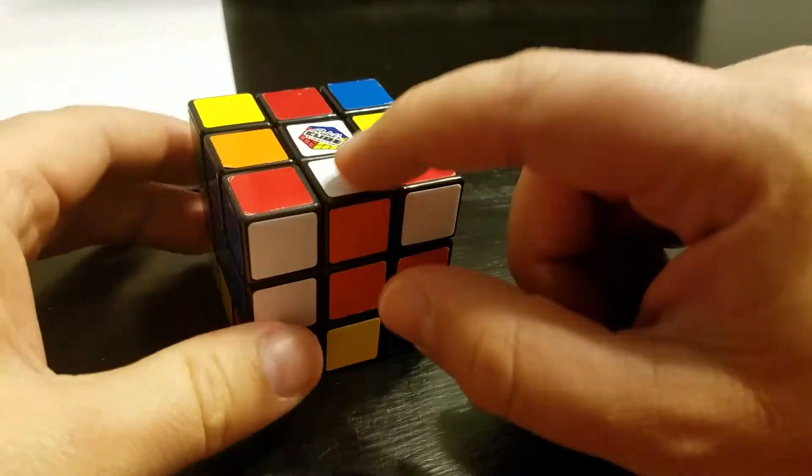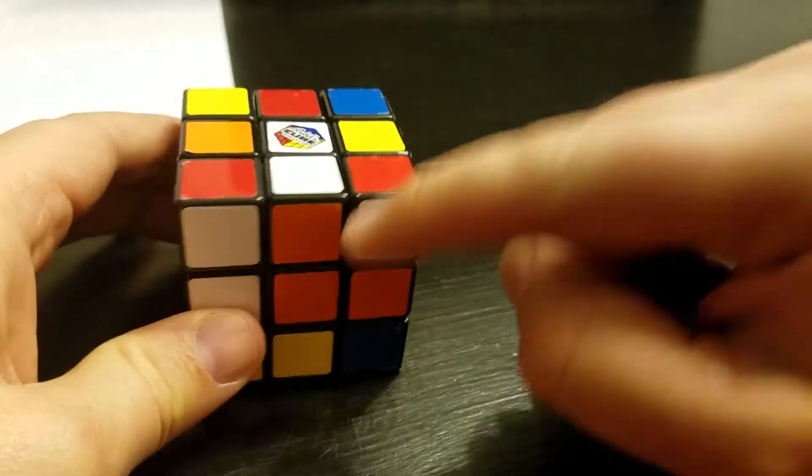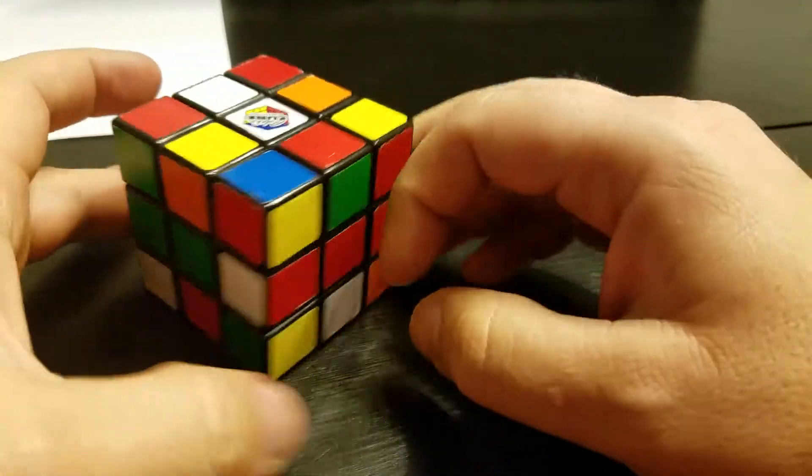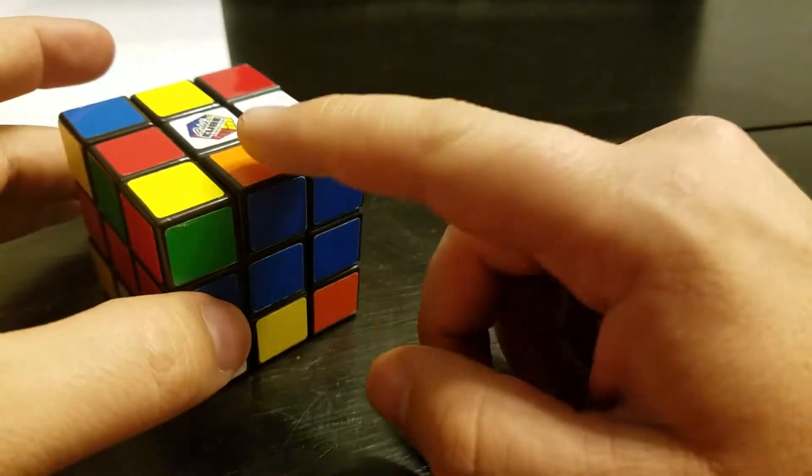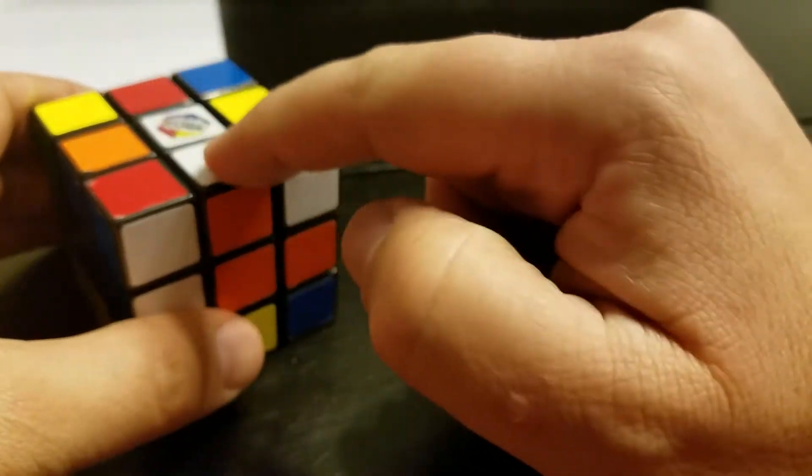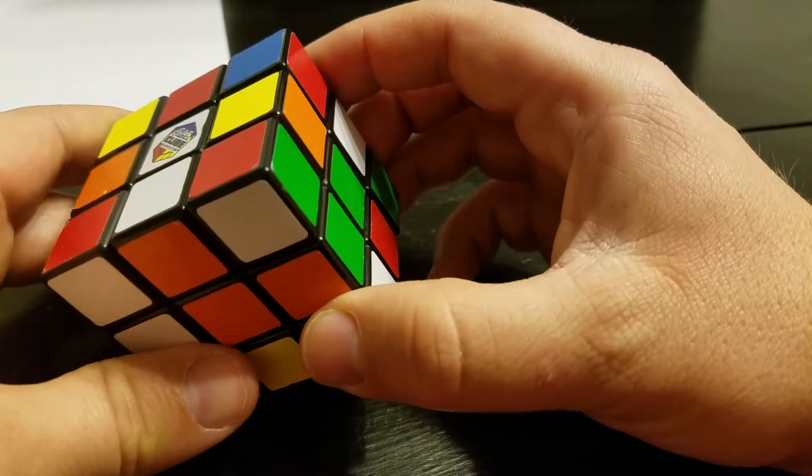For example, this one's in the right spot, so it's white-orange. Right here would have to be white-green, white-red, and white-blue, and that's how you get it. So it has to be a plus sign, but they have to be in the right spot.